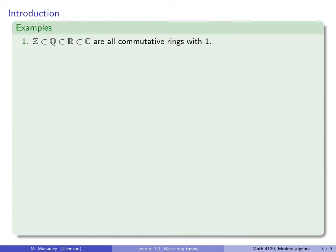Let's do some examples. First, the integers, the rationals, the reals, and the complex numbers are all commutative rings with one. Moreover, Z is a subring of Q, which is a subring of R, which is a subring of C.